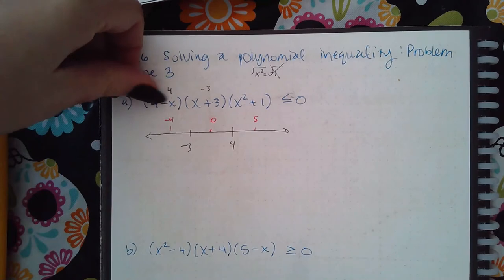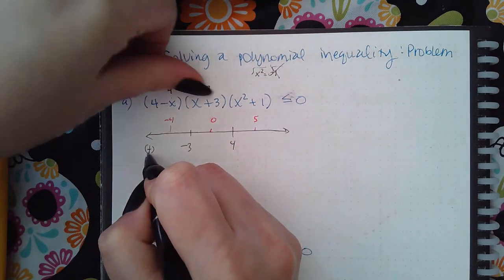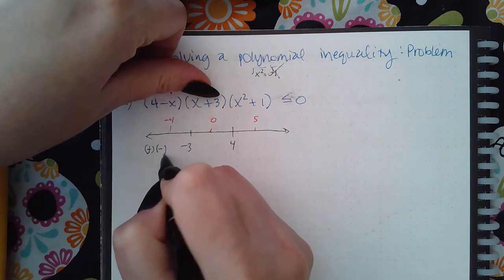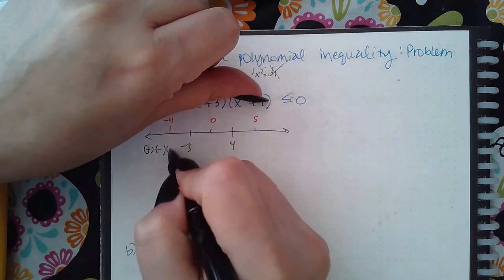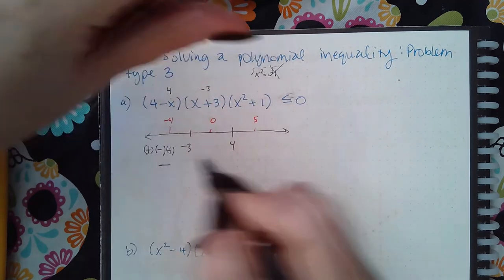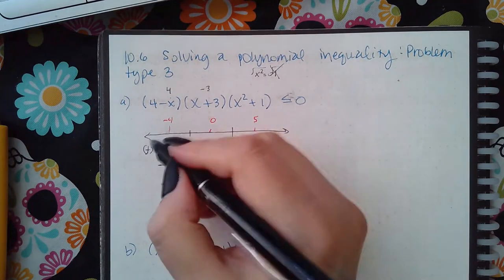When I plug negative 4 in here, it's going to be 4 minus negative 4 which is a positive value, negative 4 plus 3 which is a negative value, negative 4 squared which is 16 plus 1 is a positive value. So this ends up being negative in the end, which is less than or equal to 0, so this section will be shaded.